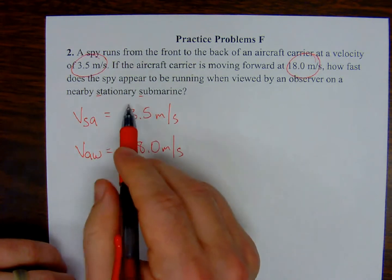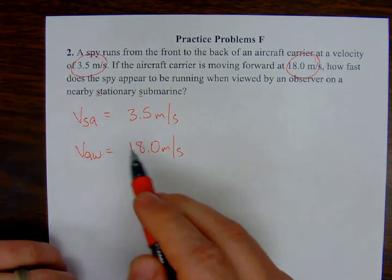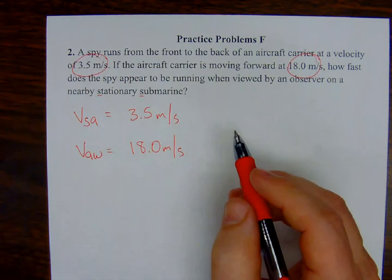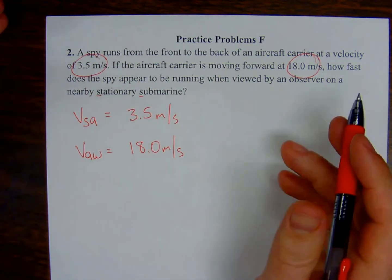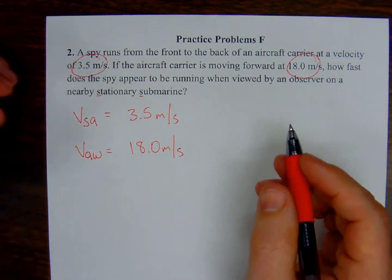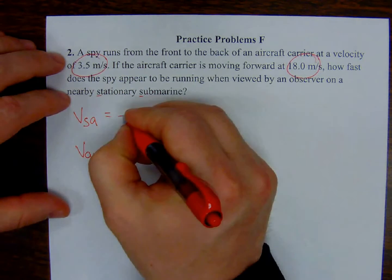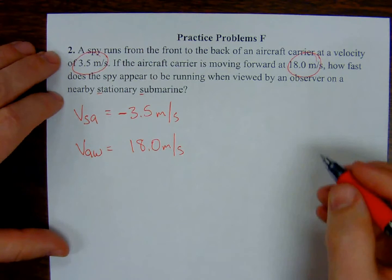Now looking at these values, I can already see which one of these I want to be my negative vector. I'm going to choose the smaller of the two values. Because the aircraft carrier is in fact moving in a particular direction. Let's just say it's moving in this direction.